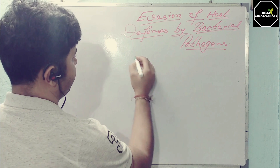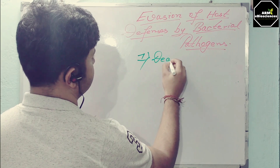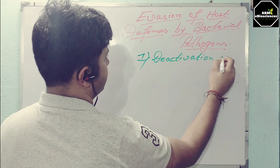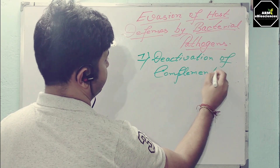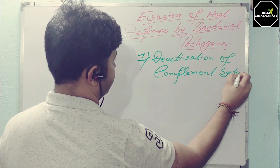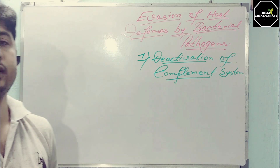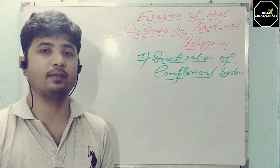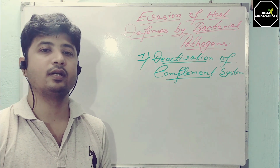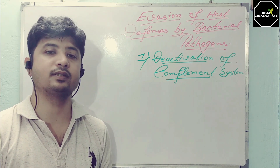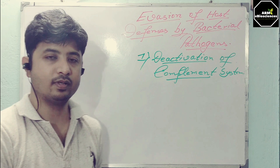The first one is deactivation of the complement system. We know that the blood or the serum contains complement proteins which help in clearing pathogens from the blood or serum, because they can help the immune system in opsonization, as well as the lysis and neutralization process. But some bacteria have a mechanism to evade this complement activation.